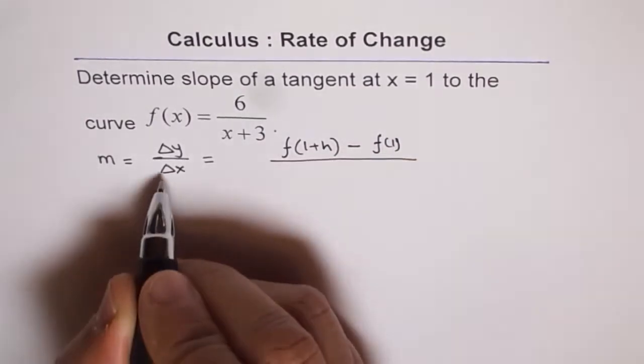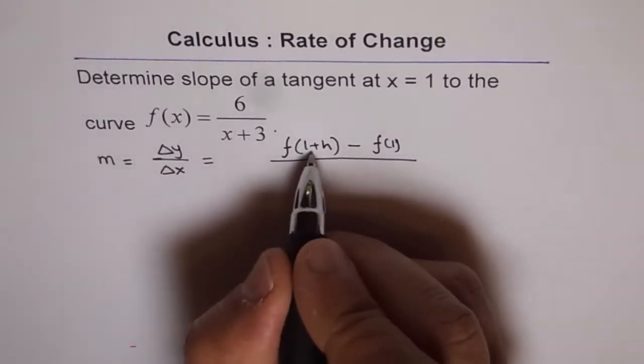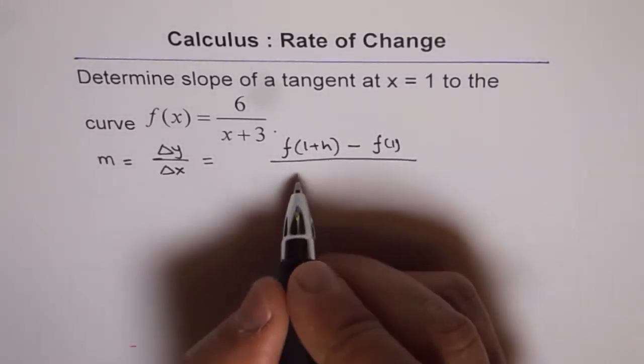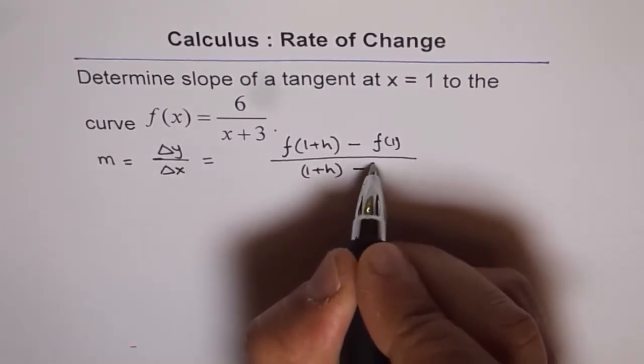Divided by difference in x values. Now, difference in x values will be, these are the x values of the coordinate, correct? 1+h minus 1.